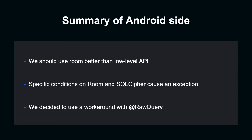To summarize the Android side: we should use Room rather than the low-level API as much as possible. With the current versions of Room and SQL Cipher, there are exceptions that cannot be caught when certain conditions overlap. To deal with this, we decided to use raw query as a workaround.